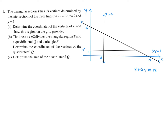They want us to find the vertices. Let's label them A, B, and C. Point A is the intersection of x plus 2y equals 12 and x equals 2. Substituting x equals 2 into the first equation gives 2 plus 2y equals 12, so y equals 5. Therefore A is (2, 5).